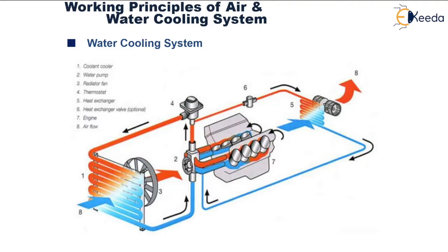The system has different components. On the left is the coolant cooler, and behind it is the water pump, which pumps water around the combustion chamber walls. The radiator fan pulls air and makes it pass over the water. Then there is the thermostat, whose main function is to regulate the temperature at which the cooling system operates. It only activates the cooling system when the engine running temperatures are on the higher side.